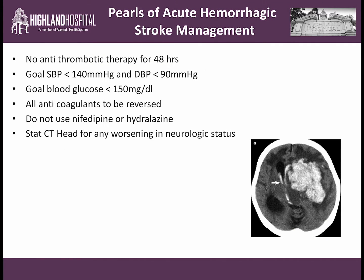Pearls of acute hemorrhagic stroke management: patients should not be given antithrombotic therapy for 48 hours. The goal systolic blood pressure is less than 140 mmHg, and the diastolic blood pressure less than 90 mmHg. The goal blood glucose level is less than 150 mg/dL. If the patient has been on any anticoagulants, this needs to be reversed — for example, if the patient came in on heparin, consider giving vitamin K and FFP. Do not use nifedipine or hydralazine, and get a stat CT head if you're worried.